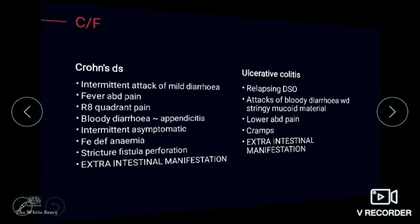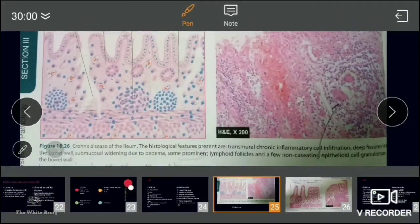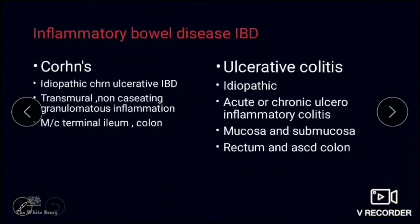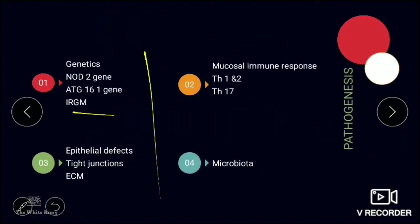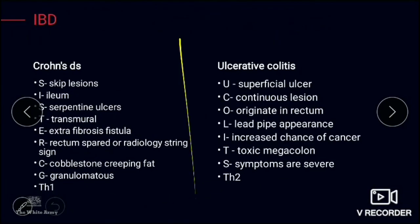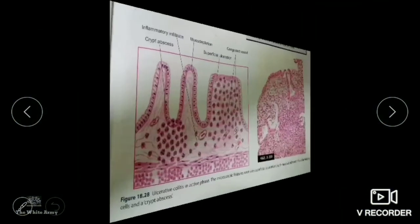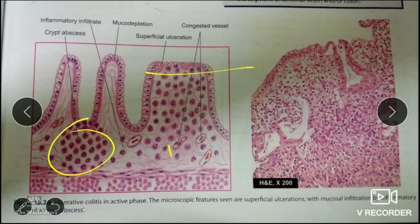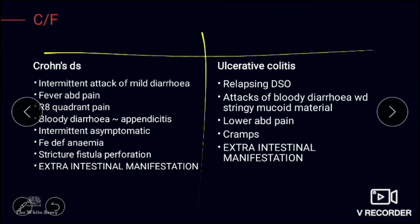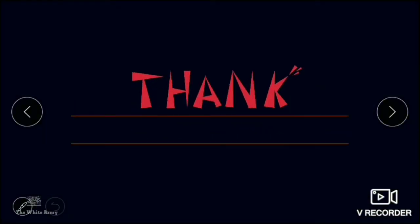To summarize: Inflammatory bowel disease has two types. Pathogenesis involves genetics, mucosal immune response, epithelial defects, and microbiota changes. Crohn's disease features (SISTER mnemonic with TH1), while ulcerative colitis features superficial inflammation with TH2. Microscopic views show deep fissures and granuloma in Crohn's, versus superficial cryptitis in ulcerative colitis. This covers the key clinical and pathological differences between ulcerative colitis and Crohn's disease.